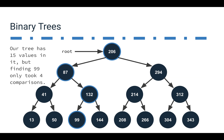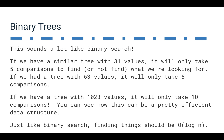Our tree has 15 values: eight nodes at the bottom, four at the next layer, two at the next, and one at the root. Finding 99 only took four comparisons. If you had 31 values, it would only take five comparisons. With 63 values, only six comparisons. Going up to 1,023 values with the same structure, it's only 10 comparisons. Get up to a billion values and it's really only about 30 comparisons.